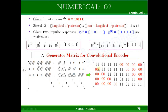The second row of the generator matrix is obtained by shifting the first row by two spaces, because N is equal to 2 — there are two generator sequences giving two outputs. The third row is obtained by shifting the second row by two spaces again. The fourth row is obtained by shifting the third row by two spaces. That is how you get all 5 rows and all 16 columns of the generator matrix.